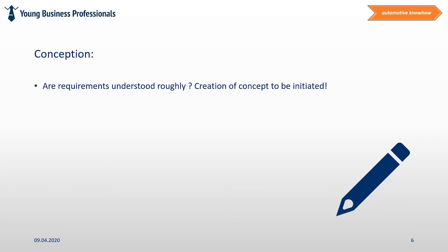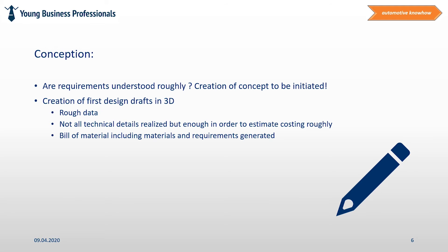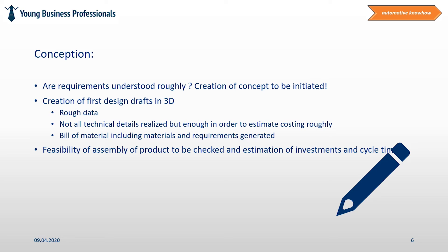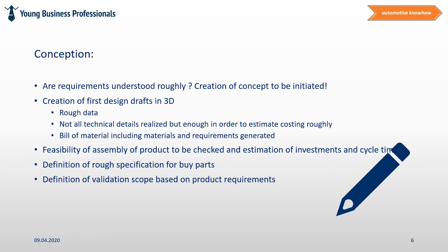Once all requirements are understood, the team can start to work on a first design concept. 3D files are created that are not yet showing all technical details but are enough to identify product cost roughly. In addition, a bill of material including material selection according to the customer specification is useful. Based on the bill of material, the whole assembly process is drafted in a superficial manner in order to estimate cycle times and investments to industrialize the product. Moreover, purchased components will be prepared to RFQ them preliminary at sub-suppliers, and a preliminary validation scope is defined based on the identified product requirements.